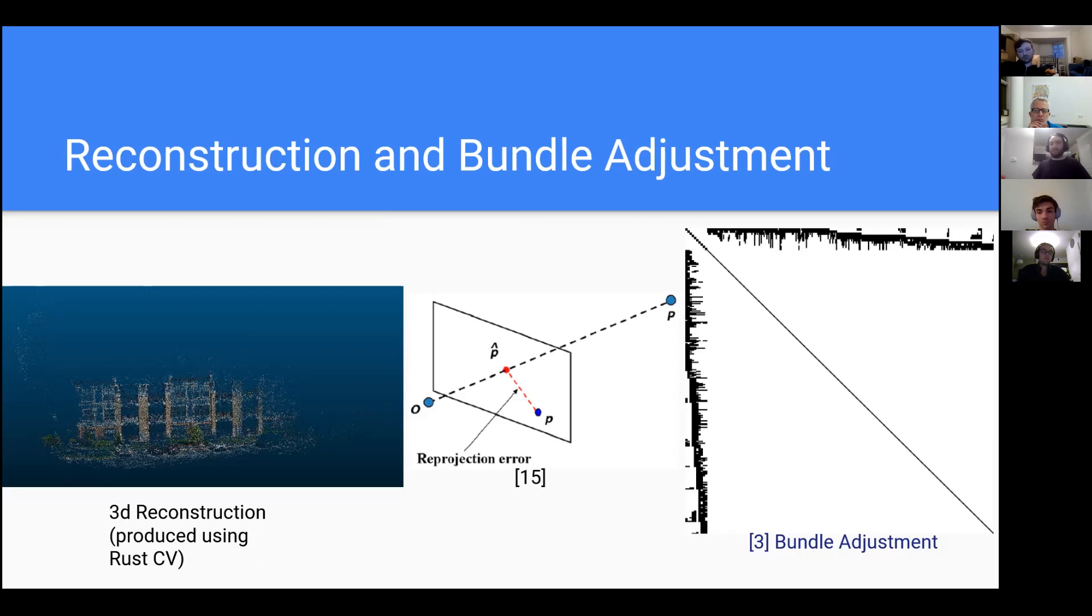And then we triangulate those points. And on the left is an example of a 3D reconstruction produced using Rust-CV. What you can see is actually an apartment complex building and some trees and grass just below it, and then a parking lot in front of it. And you can maybe make out a few cars. There might be some compression going through Zoom, but that's what it is. And that's also from video I took myself as well. So basically, it's a really cool process that you can actually recreate 3D information, even though it's been collapsed down into 2D going into your camera.